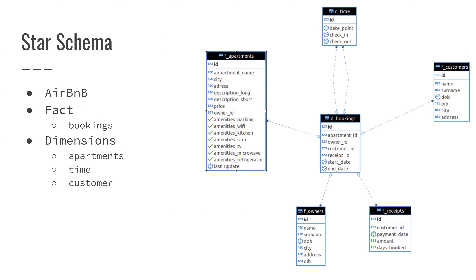Airbnb uses a star schema for their data organization for analytics. The fact table is right there at the center — this is why it's called a star, because each dimension is linked by a single branch to that center core. Every time a booking is made, you have the unique ID associated with the booking, and then all these foreign keys: apartment ID, owner ID, customer ID, receipt ID, and the start and end date of the booking. Those foreign keys link to the dimension tables. If you want just customer information, you go over to the customer dimension table and bring it in. If you want apartment info, you pop over there and get it. Depending on the information you want at a given time, it's very easy to bring this information in and out of your database for analysis.